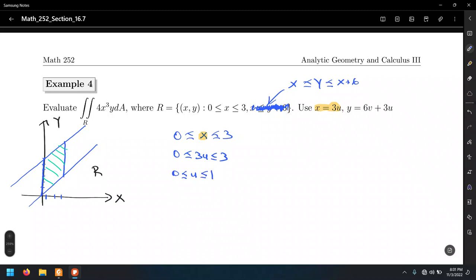What about the limit for y, which would be v? That second condition for which I had the typo, I have it corrected here. That means X less than or equal to Y less than or equal to X plus 6.